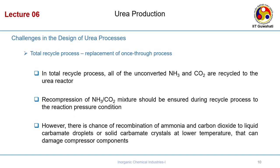The stripping process is also called a total recycle process. All unconverted ammonia and CO₂ are recycled back to the urea reactor. However, you cannot recycle them directly — the mixture must be recompressed, but not to such a degree that it forms carbamate again. There is a risk that ammonia and CO₂ combine to form liquid carbamate droplets or solid crystals at lower temperatures, which could damage the compressor.